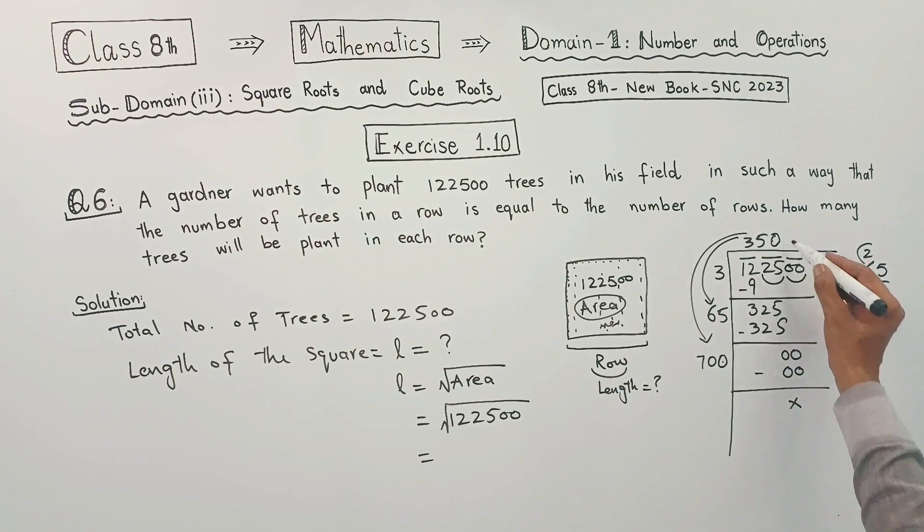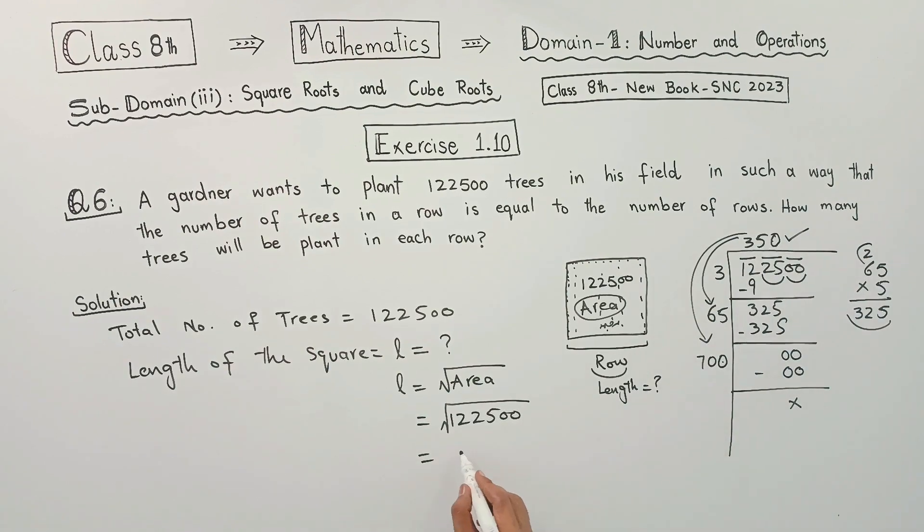We have 350 as the answer. So we found the length, we found the side of the square. The square side length we have is 350.